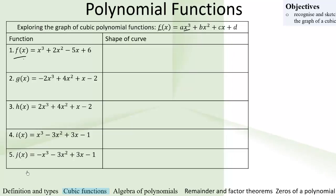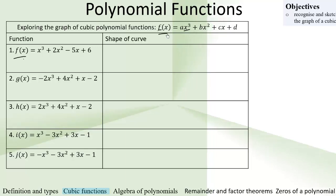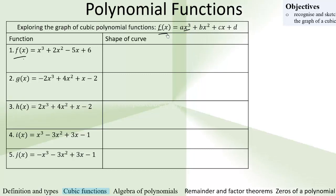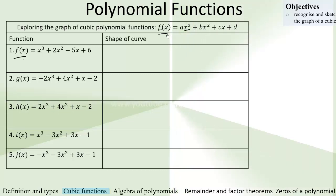Let us now consider cubic polynomial functions. They are of the form f of x equals ax cubed plus bx squared plus cx plus d. Now, we are going to explore the graph of cubic polynomial functions.